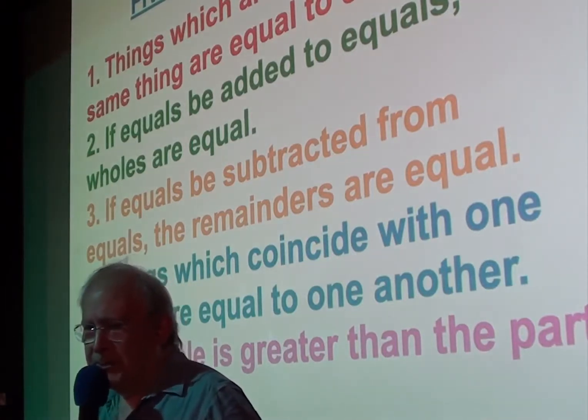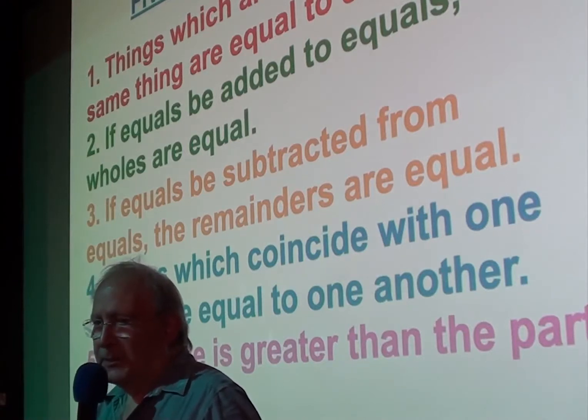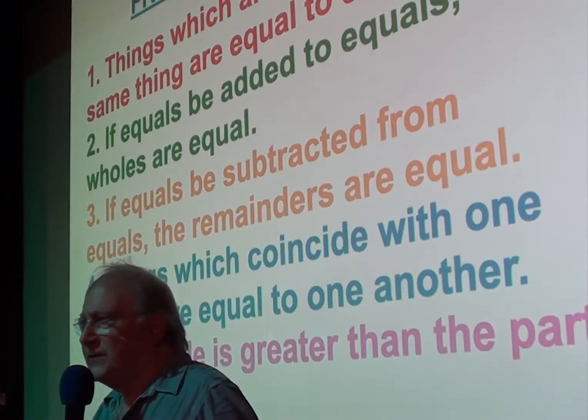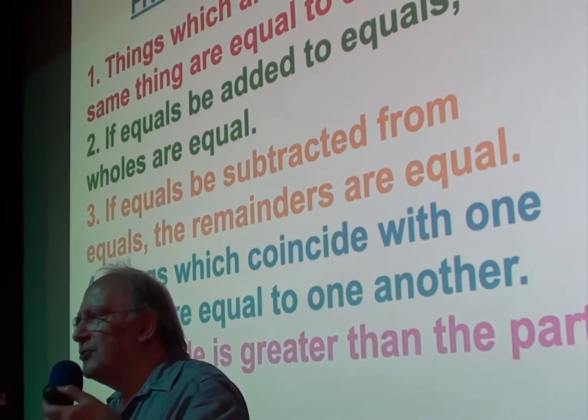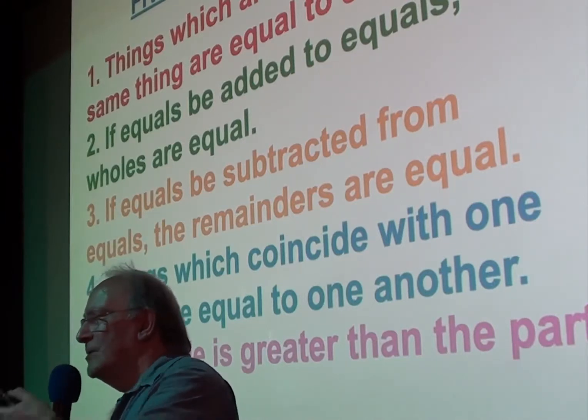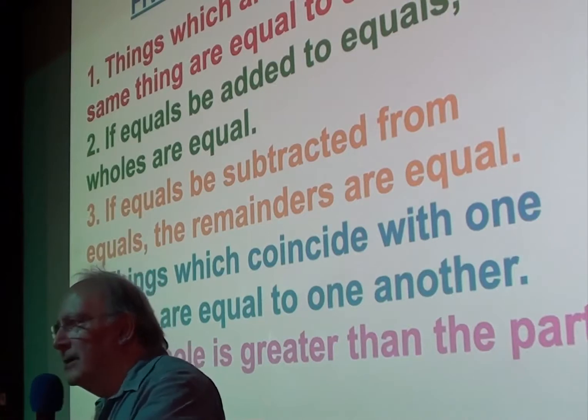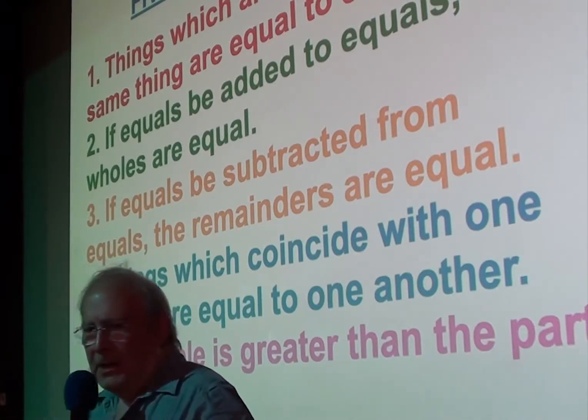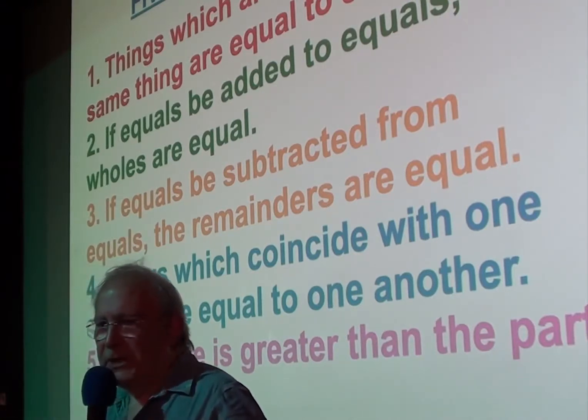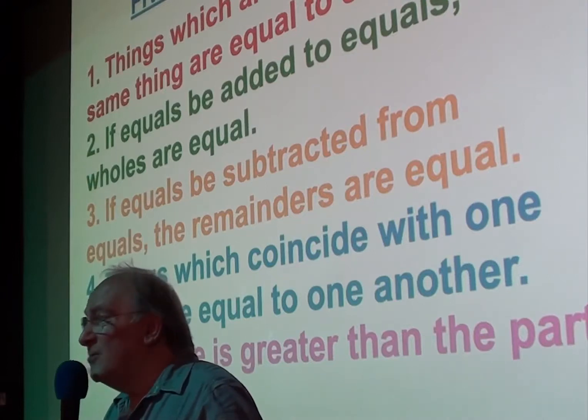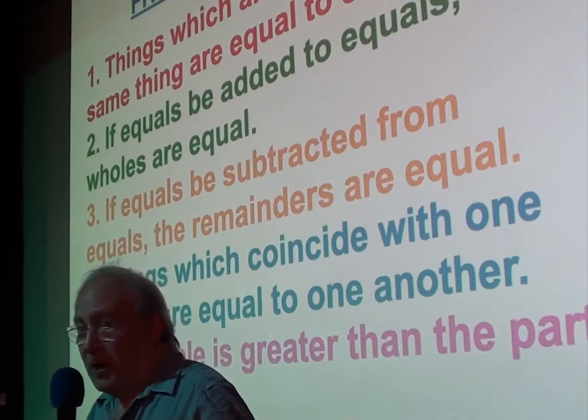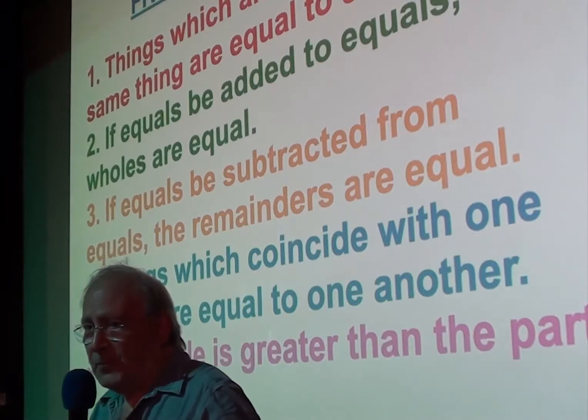Things which coincide with one another are equal to one another. He's going to use this for his geometry. Basically, saying if one triangle fits exactly onto another triangle, they're the same triangle. And then the fifth one, the whole is greater than the part. Well, this almost goes without saying. A whole cake is bigger than a slice of a cake. So he had those five common notions.